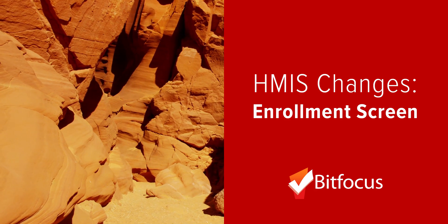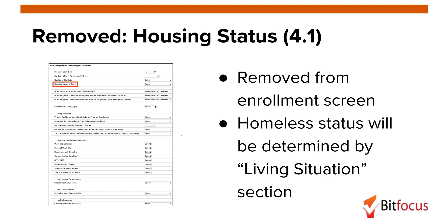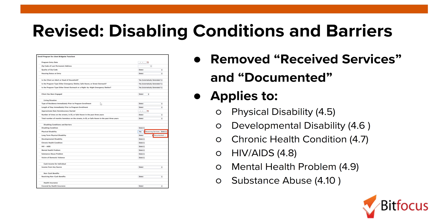Now we'll review changes to the standard enrollment screen. The field housing status at entry (data element 4.1) will be removed from the standard enrollment screen. Homelessness status will be determined by the responses to fields in the living situation section of the screen. The dependent fields receiving services and documented will no longer be collected.